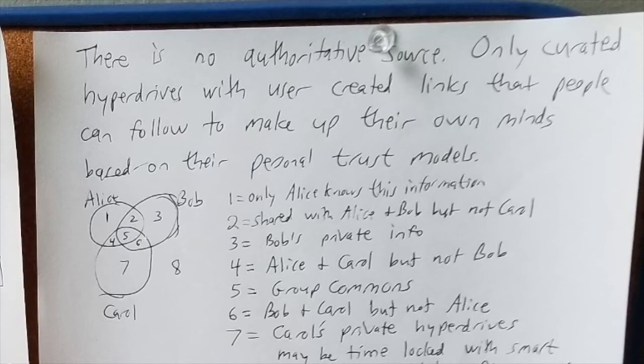So say Alice, Bob and Carol are a small group. Maybe they're working on music. But this is the Venn diagram of what they know about each other and their work. So this number one, only Alice knows certain piece of information. Like maybe she just downloaded something from a library archive and Bob and Carol don't know about it yet. But then she shares that with Bob, but not Carol. So that's this area. And then Bob has some private info that he's not ready to share yet, but he's working on it. And then four is Alice and Carol, but not Bob.